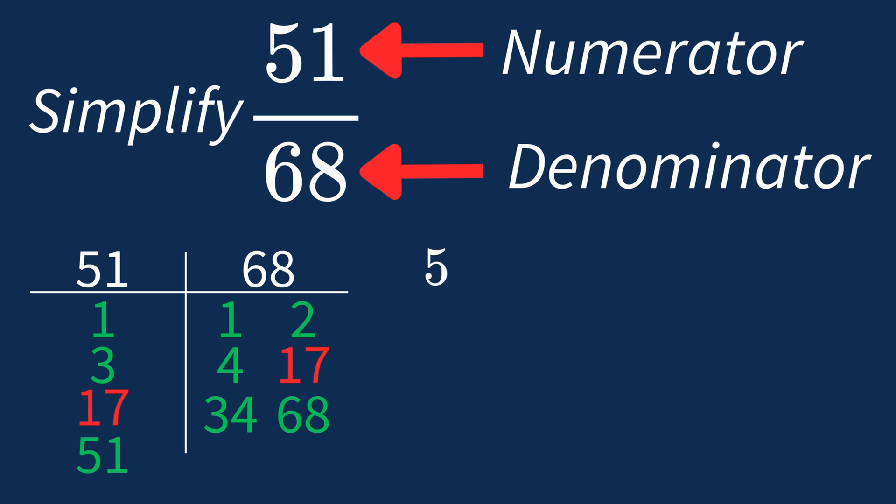Dividing the numerator, 51 by 17, gives us 3. Dividing the denominator, 68 by 17, gives us 4.